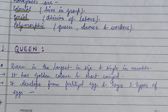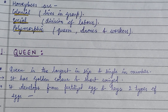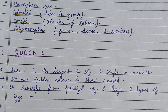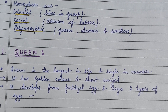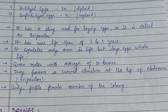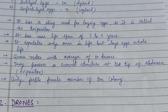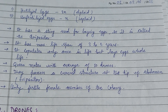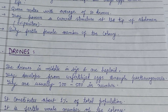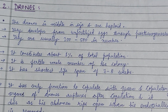Social life in honeybees: honeybees are colonial, social, and polymorphic. The queen is the largest in size, single in number, has a golden color, is winged, and is developed from a fertilized egg. She lays two types of eggs: fertilized and unfertilized. She is the only fertile female member of the colony, has a maximum life of three to five years, and mates with an average of ten drones.